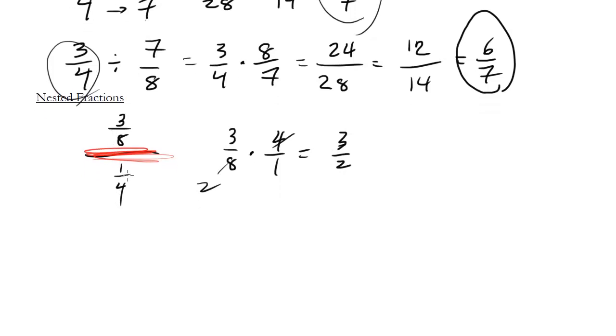Or you can cross out and factor things out that are on the same level. So notice this 4 is on the same level as the 8. They're both on the bottom of their respective halves of this fraction. So I can go ahead and cancel that, make that a 2, and again I'm left with 3 halves. That's another way to look at it. Kind of up to you which way you like.